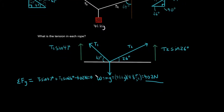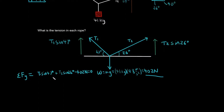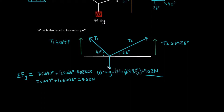We can rearrange this equation to: T1 sin(47°) plus T2 sin(26°) equals 402 Newtons, because the upward components equal the downward component. However, we can't solve for T1 or T2 yet because we have two unknowns. So we need another equation — we'll use the sum of forces in the x-direction.